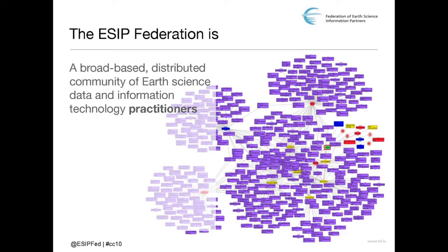It's interesting to see all of the purple dots that are the people — we have about a thousand people that are working together on these common issues, and you can start to see how those topics are interrelated. What's really interesting about this community is that they're technology practitioners, so they're actually people on the ground that are doing the work.